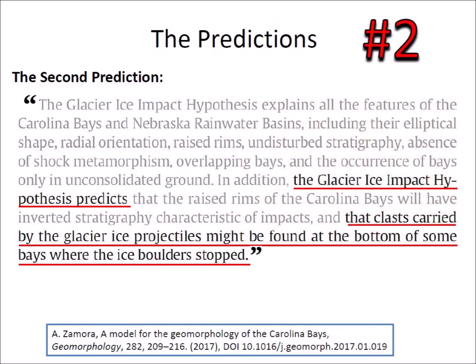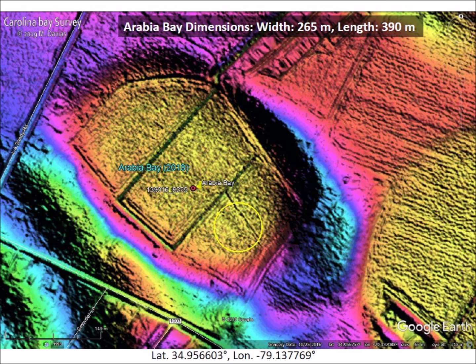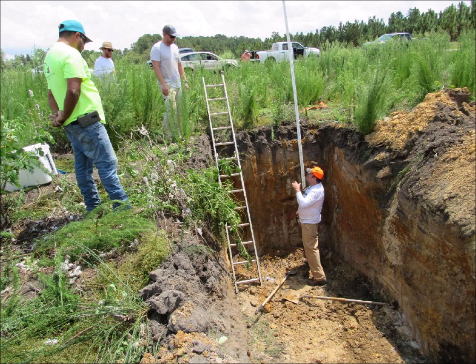The second prediction made by the Glacier Ice Impact Hypothesis was that clasts carried by the glacier ice projectiles might be found at the bottom of some bays where the ice boulders stopped. Clasts are broken pieces of rock, and finding them within Carolina Bays is harder than finding inverted stratigraphy in the rims. On August 16, 2019, George Howard, founder of Restoration Systems LLC in North Carolina, organized the exploration of Arabia Bay — the first time the apex of a Carolina Bay was explored for this purpose.